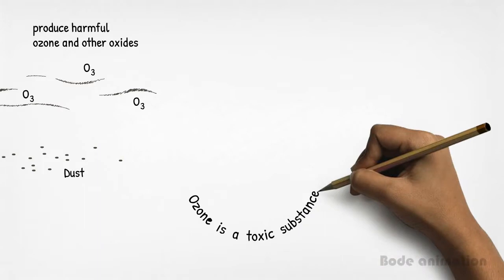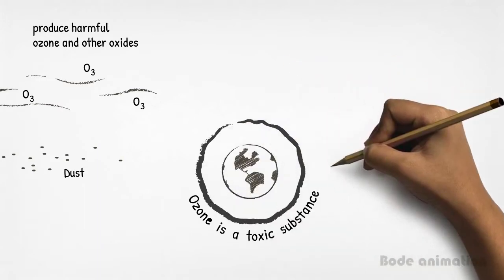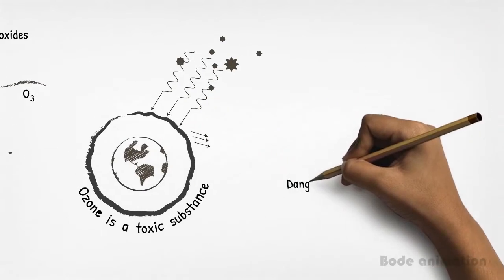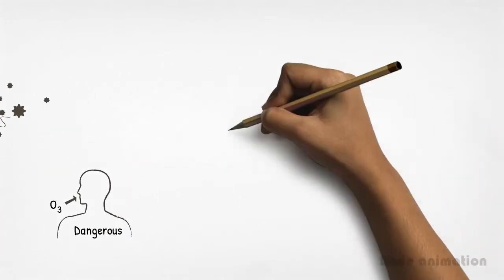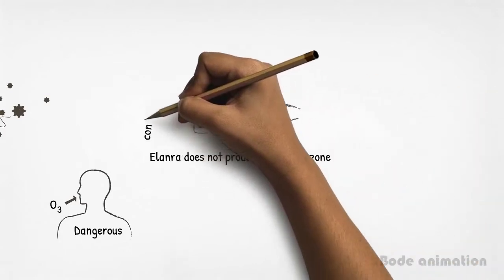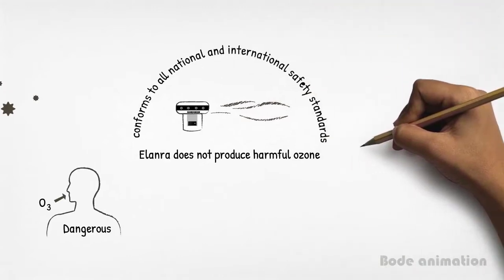Ozone is a toxic substance that the Environmental Protection Agency and other bodies warn against. Ozone can be used as a sterilizing agent but is dangerous if inhaled. Elanra does not produce harmful ozone and conforms to all national and international safety standards.